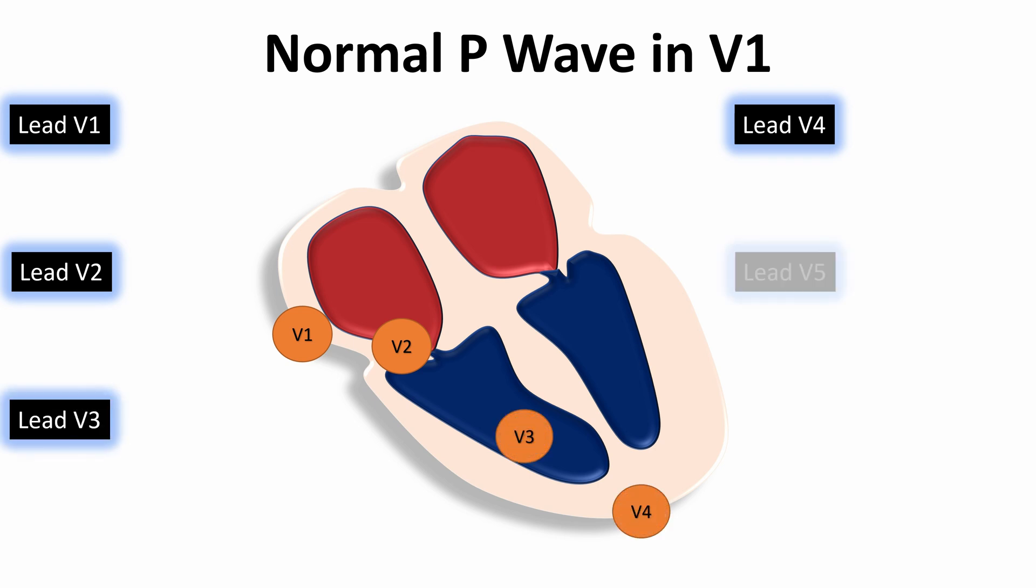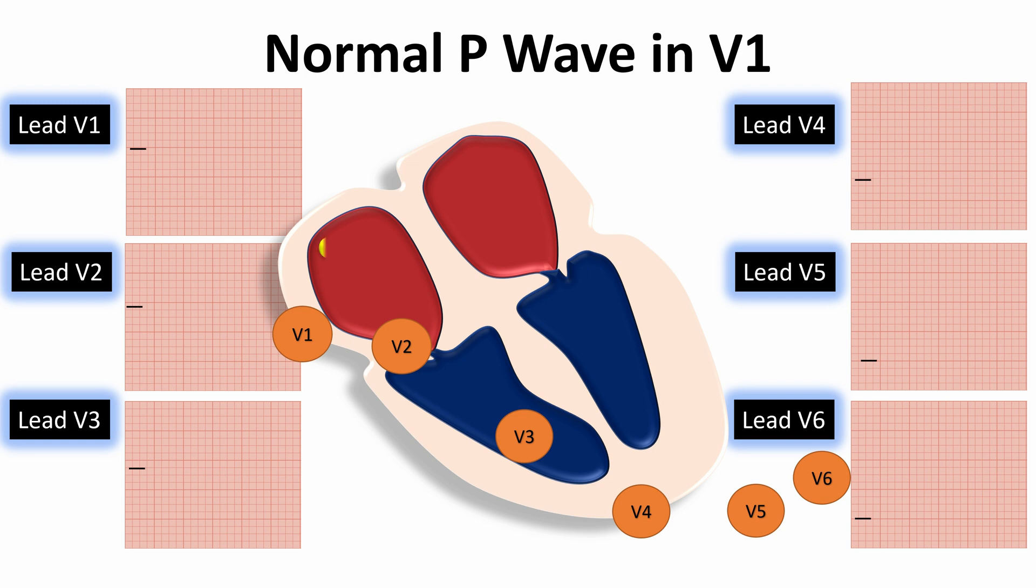In lead V1, it is generally biphasic, that is upright, but with a small terminal negative deflection, representing left atrial activation in a reverse direction.